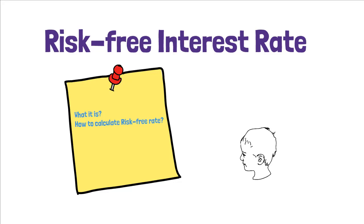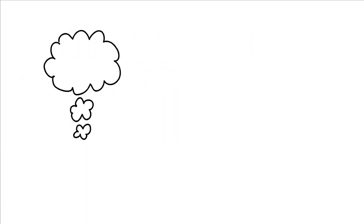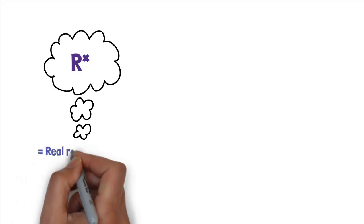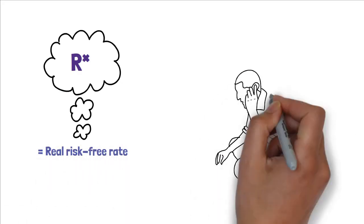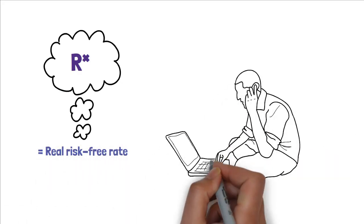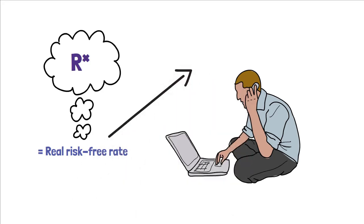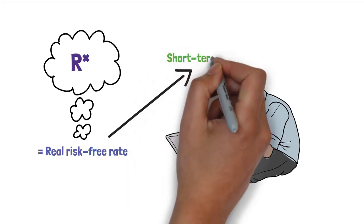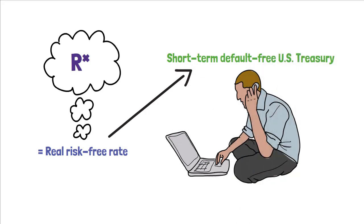The real risk-free rate of interest, which is usually denoted as R star, is the interest rate that would exist on a riskless security if no inflation were expected. In other words, the rate of interest on short-term default-free U.S. Treasury security in an inflation-free world is the real risk-free rate.